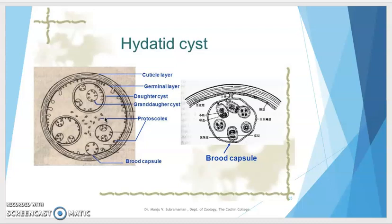The only way to control Echinococcus is through preventive measures: avoiding contact with dogs, and not feeding raw animal carcasses — especially from slaughterhouses — to dogs. Treatment involves removal of the cysts or inactivation of the hydatid sand. Echinococcus, commonly known as the dog tapeworm, causes hyatid disease. That's all for this video lecture, thank you.